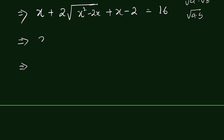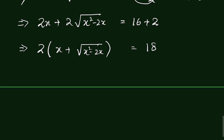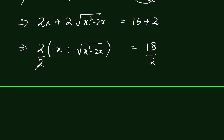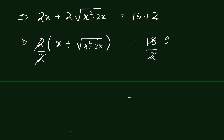So we have 2x minus 2 plus 2 times square root of (x² minus 2x) equals 16. Sending minus 2 to the right gives 16 plus 2 equals 18. Taking 2 as common: 2 times (x plus square root of (x² minus 2x)) equals 18. Dividing both sides by 2, we get x plus square root of (x² minus 2x) equals 9. Sending x to the right: square root of (x² minus 2x) equals 9 minus x.